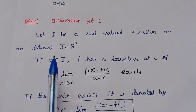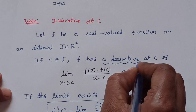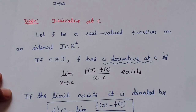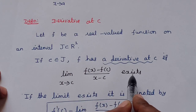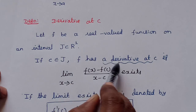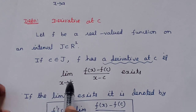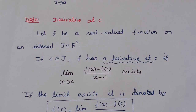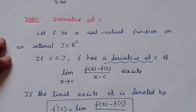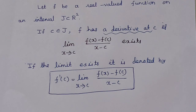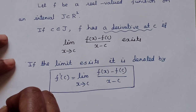In the interval J, there is a point c. Then f has a derivative at c if the limit as x tends to c of [f(x) minus f(c)] divided by [x minus c] exists. If this limit exists — meaning it is some finite value — we say f has a derivative at c. We represent it as f'(c), so f'(c) equals the limit as x tends to c of [f(x) minus f(c)] divided by [x minus c].